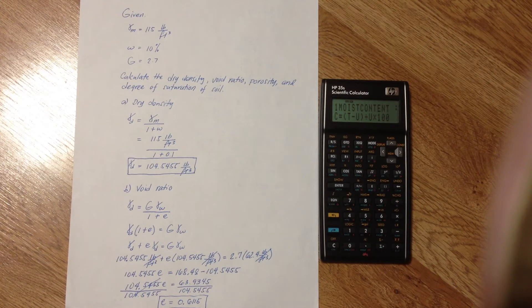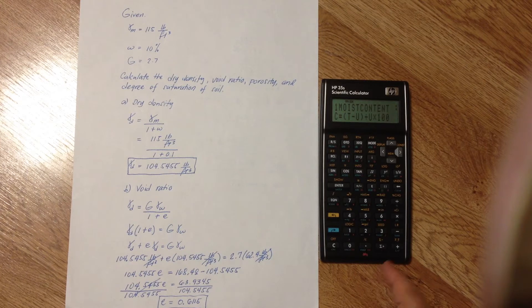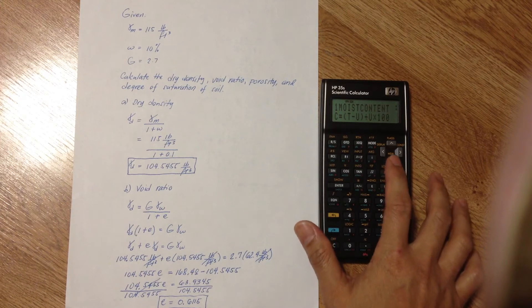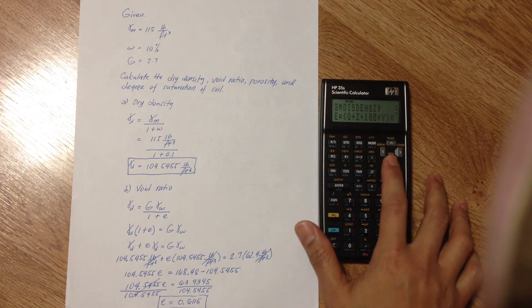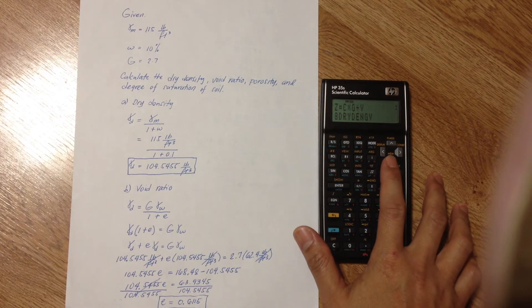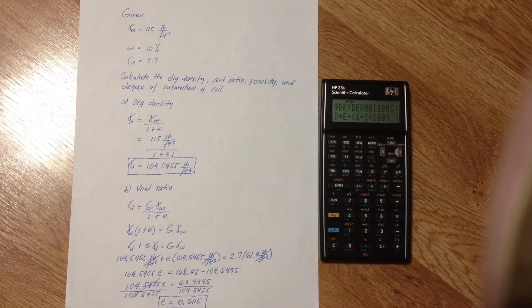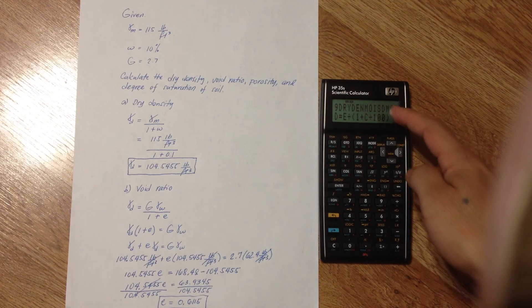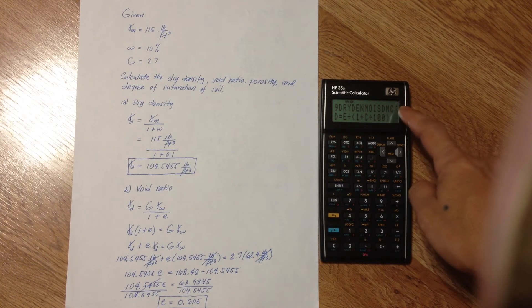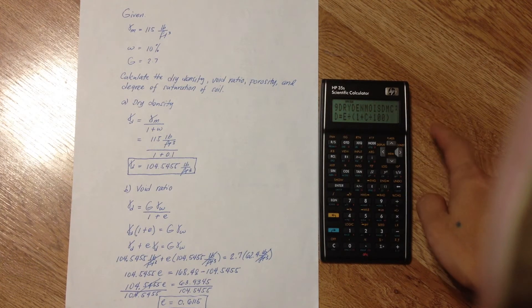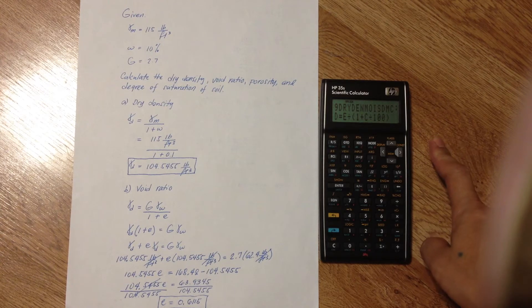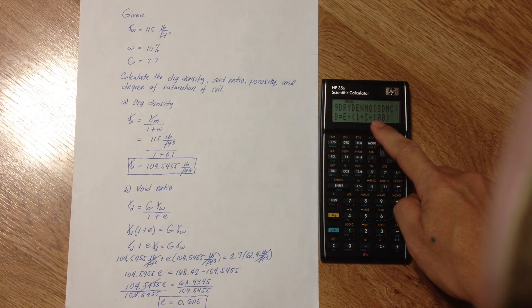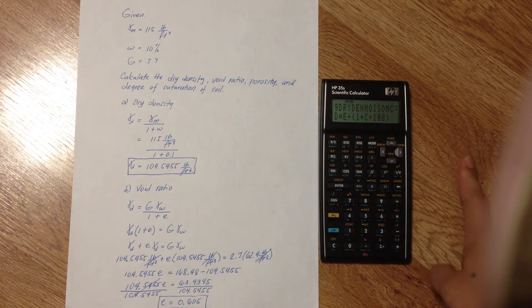And for the dry density, we use equation number 9 to solve it. So, scroll to equation number 9. There you go. That's dry density with moist density and moisture content. D is dry density, E is moist density, and C is moisture content.